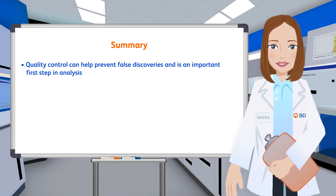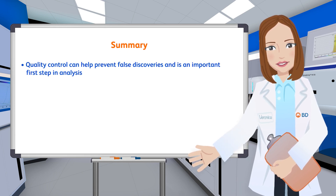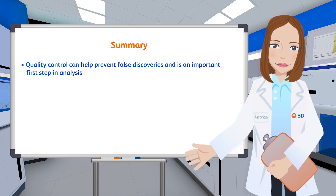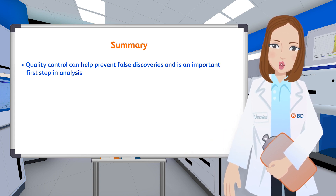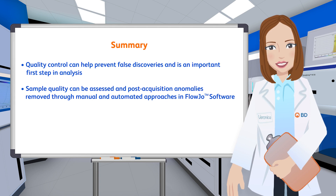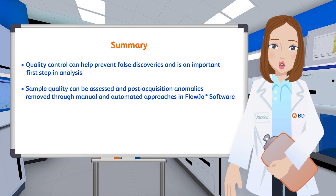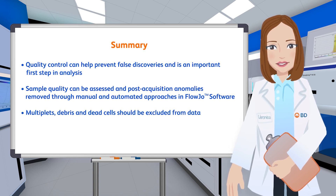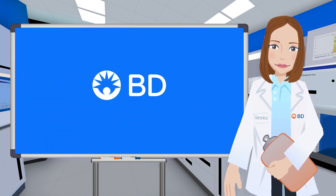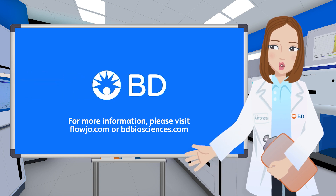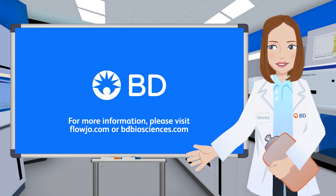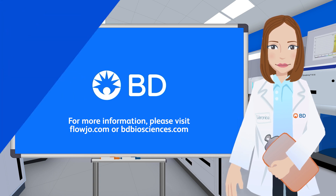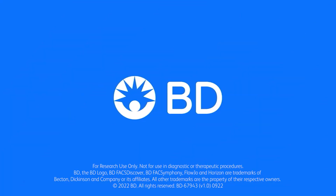To summarize, quality control of your data can help prevent false discoveries and is an important first step in flow cytometry analysis. Within FloJo software, sample quality can be assessed and post-acquisition anomalies removed through manual and automated approaches. Remember, steps to remove multiplets, debris, and dead cells should also be taken before continuing with population identification. To learn more about sample quality and associated plug-ins, please visit flojo.com or bdbiosciences.com for additional educational materials. Thank you so much for joining us!